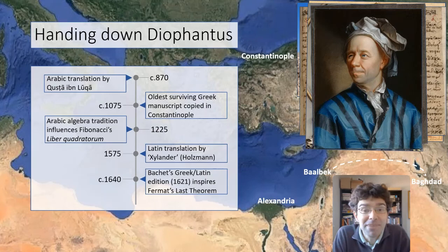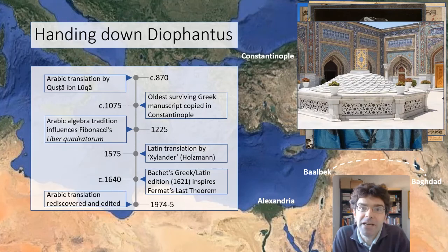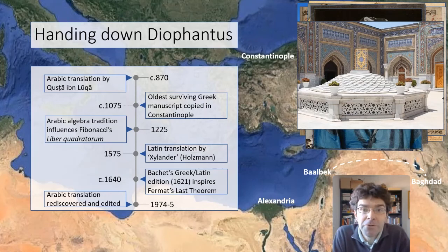The last massive development in the understanding of Diophantus's work came in the 1970s with the rediscovery at Mashhad in Iran of a copy of Kusta ibn Luca's long-lost translation, and so suddenly we got those four extra books of Diophantus to study — as recently as 1975.